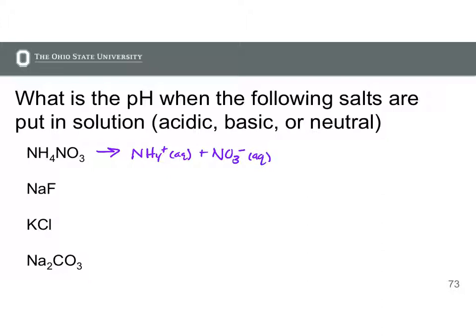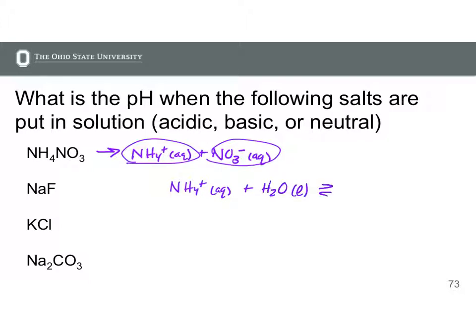We need to consider how each of these ions will behave in water. What I like to do is write out an equilibrium in water for each of the ions. Whenever we have the cation, we know that cation is going to donate its proton to water to form H3O+ and be left with one proton less — in this case, that's NH3. This equilibrium can happen because the product formed, ammonia, is a weak base.